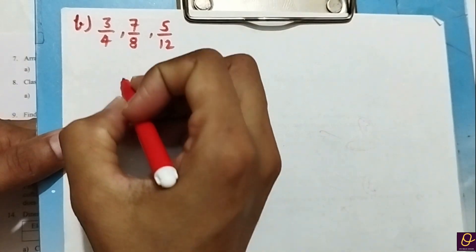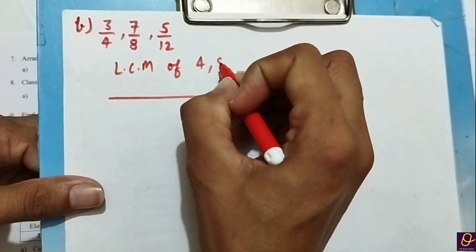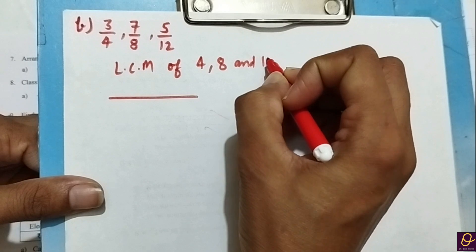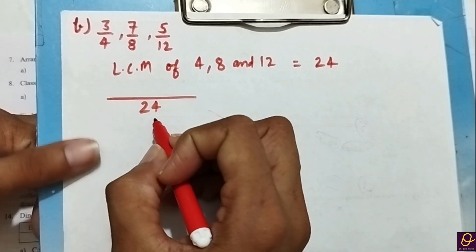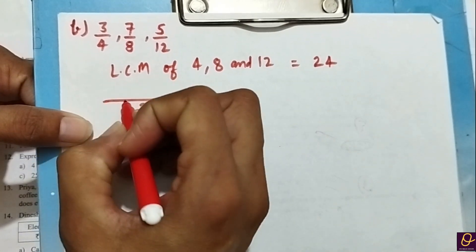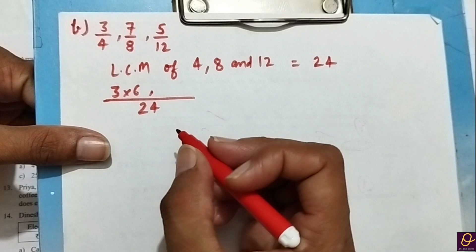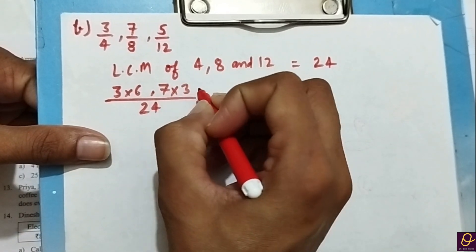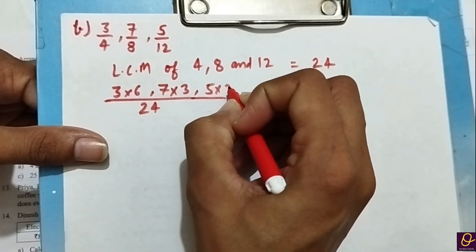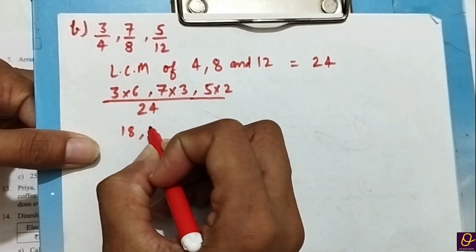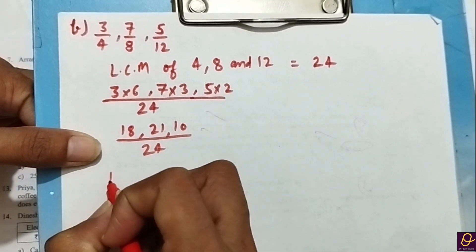This is Part B. LCM of 4, 8, and 12 is equal to 24. Now 24 divided by 4 = 6, into numerator 3 gives 18. 24 divided by 8 = 3, into numerator 7 gives 21. 24 divided by 12 = 2, into numerator 5 gives 10. So we have 18, 21, and 10 all divided by 24. Now arrange in descending order.